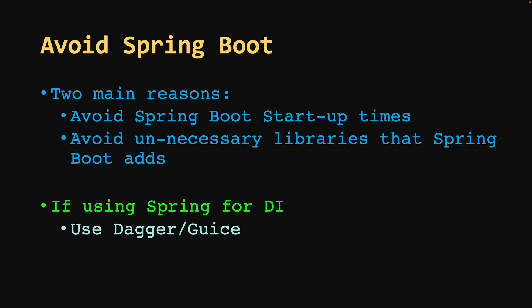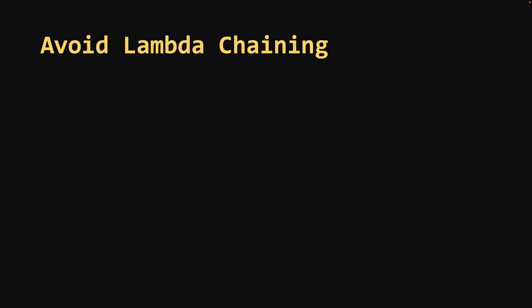Avoid Spring Boot. If your Lambda runtime is Java, avoid the urge to use Spring Boot. It is the most common anti-pattern in the Lambda world. Spring Boot is an excellent framework for developing microservices in Java, but it doesn't fit into the Lambda world. Using Spring Boot and other Spring libraries reduces efficiency because of unnecessary libraries that increase your artifact size, and because Spring Boot's startup time is really large and adds to the cold start issue. If you're using Spring just for dependency injection, start using Dagger or Guice instead — they are two very popular DI libraries.